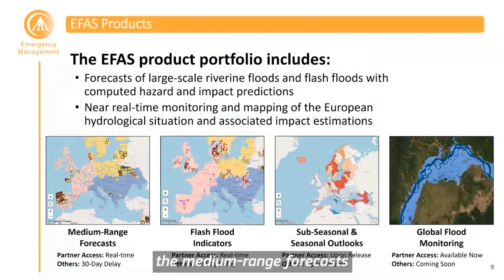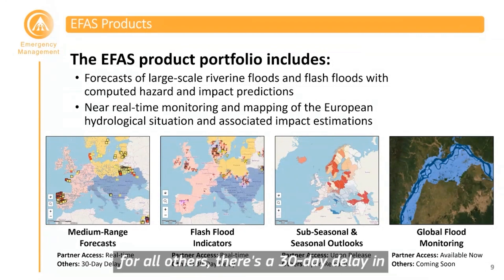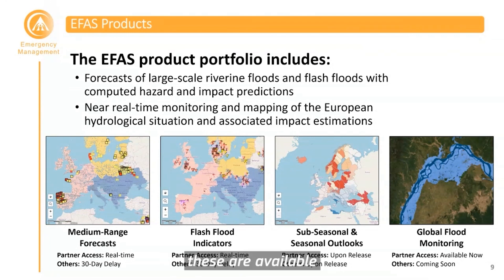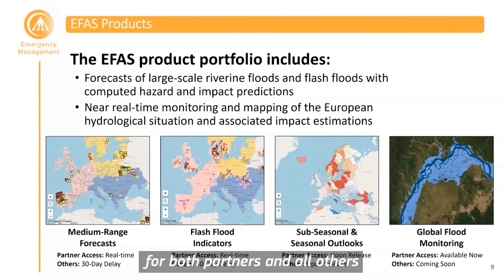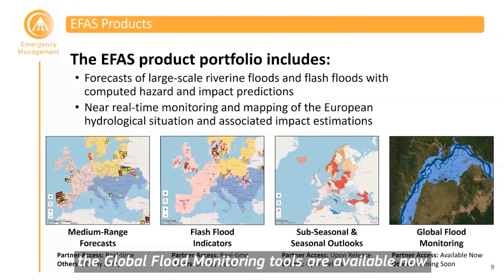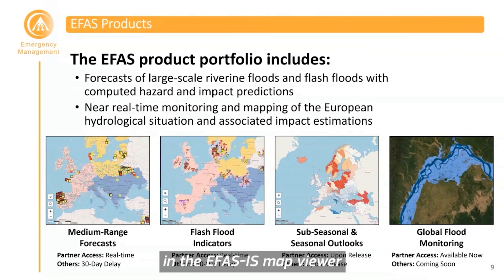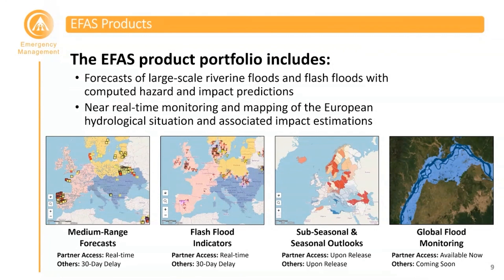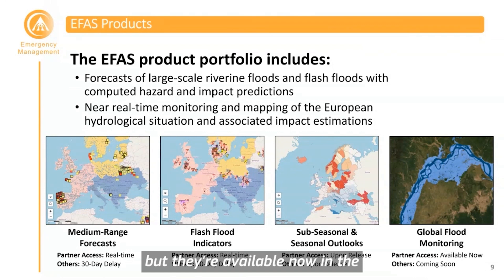EFAS partners can access the medium-range forecasts and flashlight indicators in real-time; however, for all others there is a 30-day delay. With the sub-seasonal and seasonal outlooks, these are available for both partners and all others as soon as they are issued. The global flood monitoring tools are available now in the EFAS IS map viewer for all EFAS partners, and for all others these features will be released soon, but are available now in the GloFAS web viewer.